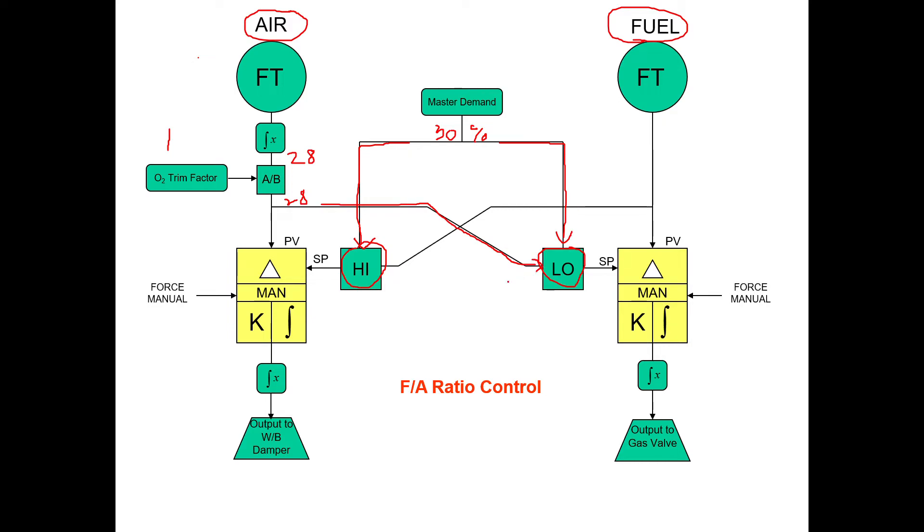That's going to head over to the low select block. So you'll have 28 coming into the low select block and you'll have 30 coming into the low select block. So the fuel set point is going to take the lower of the set point of 30 or 28 and make that the set point of fuel. So in this case 28 is lower than 30, so the fuel set point is going to be 28.